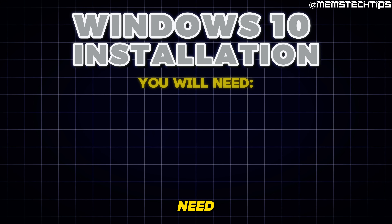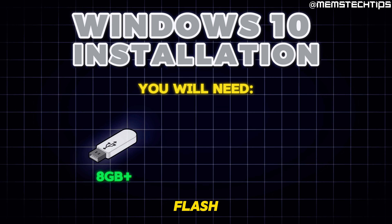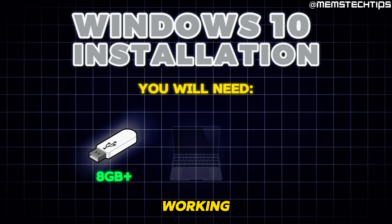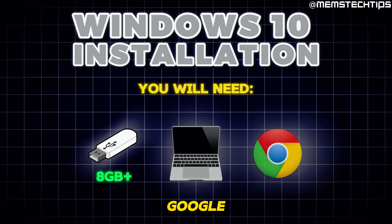You're going to need a blank or formattable USB flash drive that's at least 8 gigs in size, a working computer to create the Windows 10 bootable flash drive, and Google Chrome or Microsoft Edge.